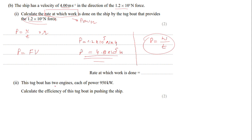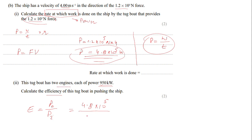The second part asks for efficiency. The tugboat has two engines, each of power 950 kW. Efficiency = output power / input power. Output power is 4.8×10⁵ W. Total input power = 2 × 950×10³ W = 1.9×10⁶ W. Efficiency = 4.8×10⁵ / 1.9×10⁶ ≈ 0.252, which is approximately 25%.